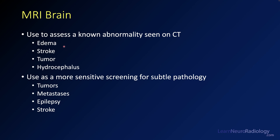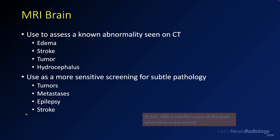If a patient has a CT as a screening exam and they have edema, signs of a stroke, tumor, or hydrocephalus, we'll want to follow up with MRI. We'll also use MRI as a more sensitive screening tool for subtle pathology — small tumors or metastatic disease often won't be visible on CT. Epilepsy is another key indication, as many underlying structural causes are not visible on CT. For stroke, we'll do MRI in the subacute phase to more definitively establish how much tissue is dead and the extent of the stroke. MRI is a better exam when time is less critical — it takes more time, requires patient screening for safety, and the cost is higher. Use MRI when you want more detailed information.